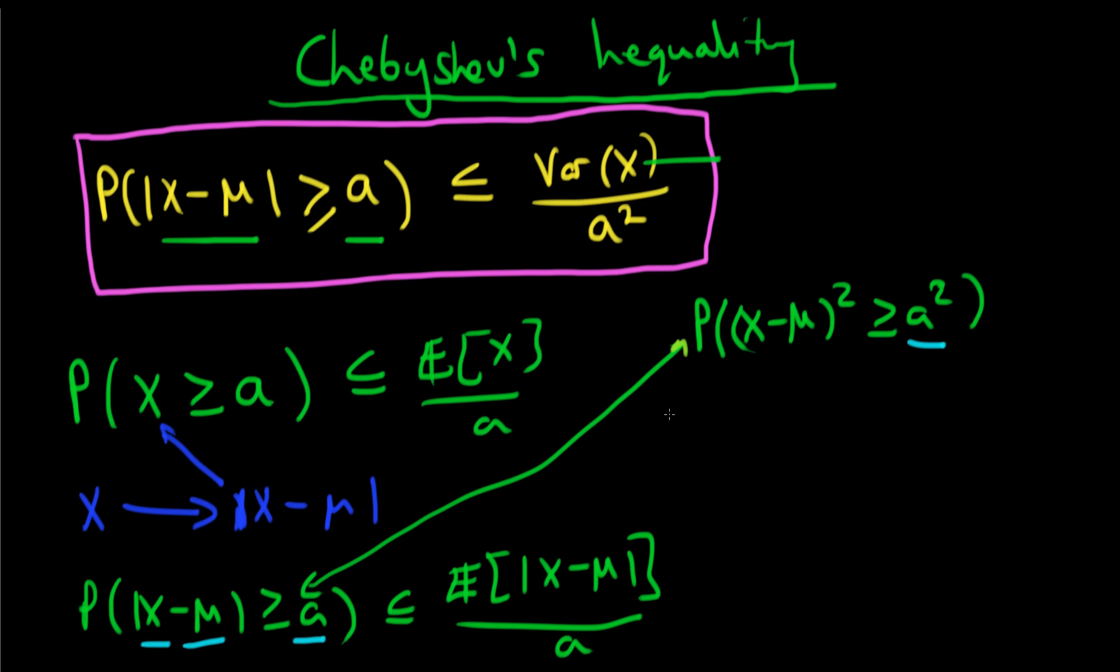But by writing the left-hand side like this, we can actually replace the right-hand side just using Markov's inequality, which is the probability that x is greater than or equal to a is going to be less than or equal to the expected value of x divided by a. But now we don't have x. We have the expected value of x minus μ all squared. And now instead of having a, we have a squared.